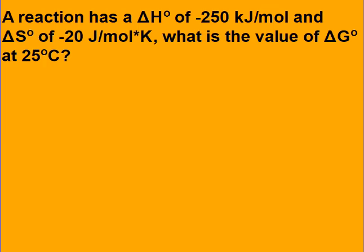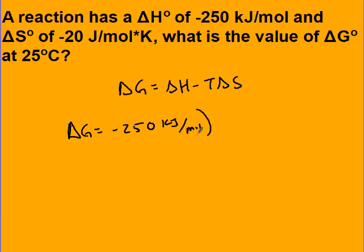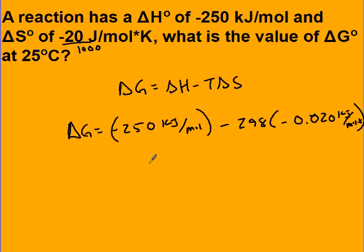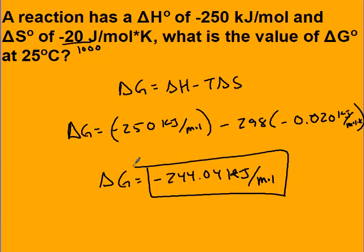Try this problem. Step one: convert delta S to kilojoules by dividing by 1000, and convert temperature to Kelvin by adding 273. Then delta G is negative 244.04 kilojoules per mole. Because we have a negative delta G, this reaction is thermodynamically favorable.